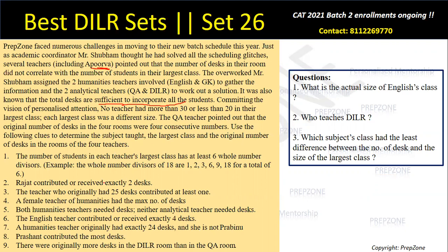Hint three: the teacher who originally had 25 desks contributed at least one. So someone started with 25 desks, and from the given information, the original number of desks in the four rooms were four consecutive numbers — one of which is 25.